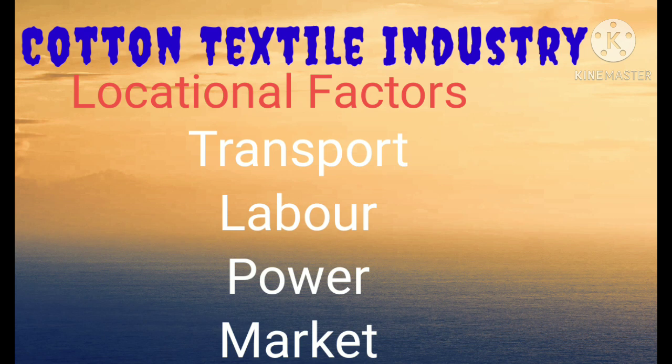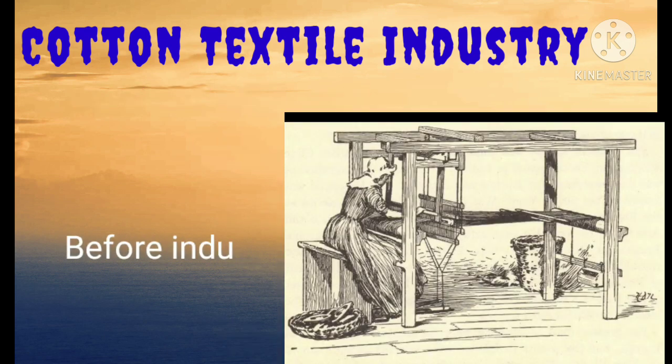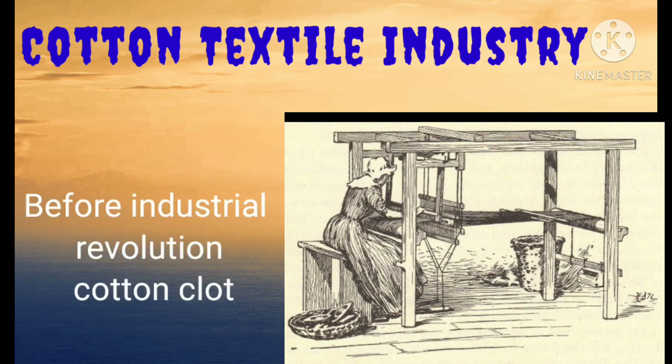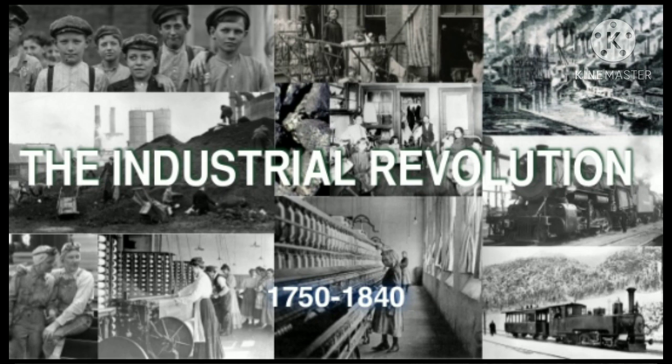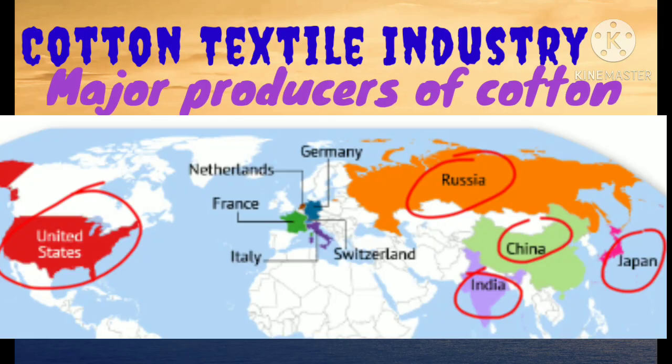Cotton cloth was made on handlooms before the industrial revolution. But a series of inventions in England in the late 18th century resulted in rapid growth of this industry. USA, Japan, India, China and Russia are the major producers of cotton textile products in the world.